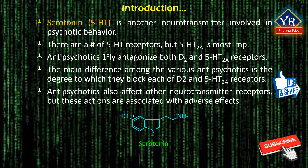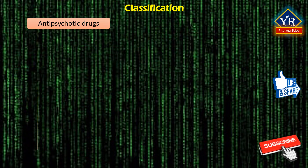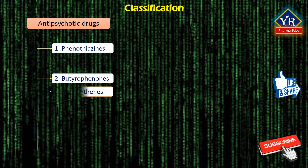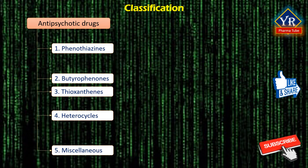Antipsychotic drugs also affect other neurotransmitter receptors, but these actions are associated with adverse effects. From the chemical point of view, that is according to chemical structure, antipsychotic drugs are divided into five groups: 1. Phenothiazines, 2. Butyrophenones, 3. Thiothixines, 4. Heterocyclics, and 5. Miscellaneous antipsychotic drugs. Phenothiazines are also known as tricyclic antipsychotics.